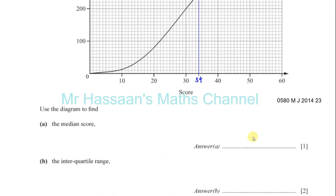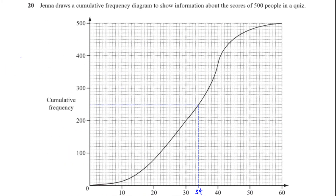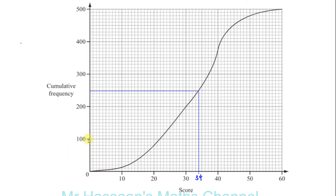What we did is we went to the middle — the score that's in the middle is the 250th because you've got 500 scores, you just divide by 2, giving 250. We went to 250 and saw what score that represents, which is the 250th score — so what score is 34.